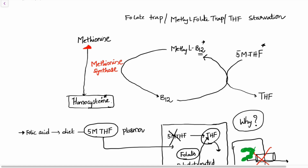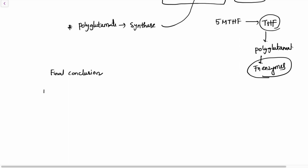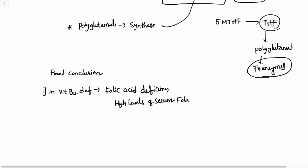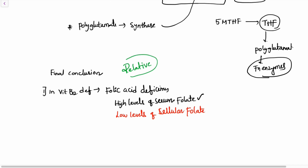The logic is simple: 5-methyltetrahydrofolate must be converted to tetrahydrofolate so that folic acid acts in the body, and for this conversion we need vitamin B12. Therefore, in vitamin B12 deficiency, there is relative folic acid deficiency — though high levels of serum folate are present, there are low levels of cellular folate. Folate is trapped in the serum and is not available for DNA and RNA synthesis. This concept is the folate trap.